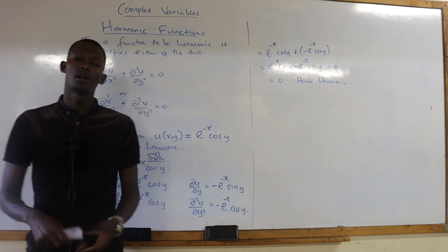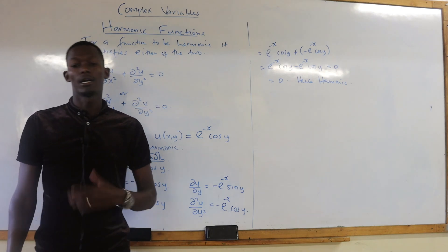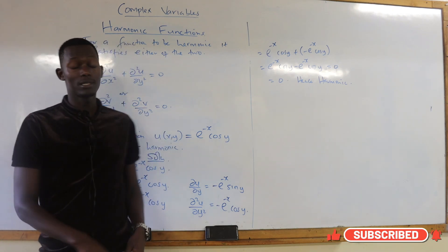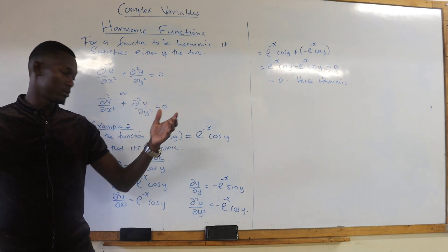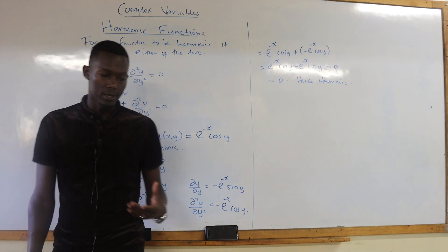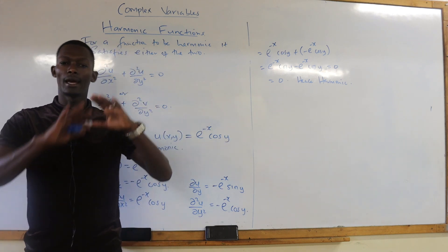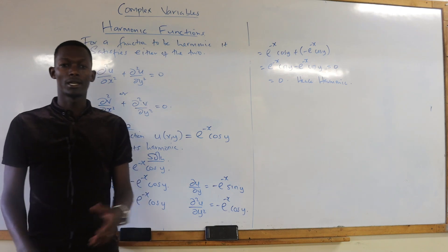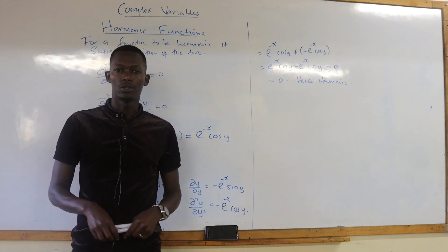That is how you verify if any function is harmonic. What you need to know and understand is how to do the derivatives of particular functions, and that's it. In the next class, you're given a function u — remember this is just the real part of a function of z. We will check: if you're given u(x,y), how do you get the conjugate v(x,y), the imaginary part, that makes the entire function analytic? Kindly remember to subscribe, share and comment, and let me know how I can help. Thank you and see you in the next lesson.